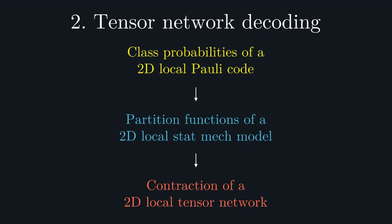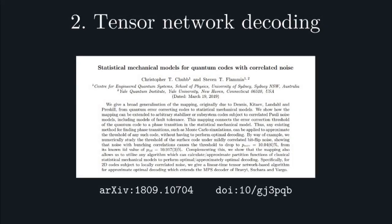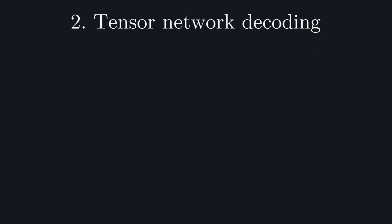For the sake of brevity, I'm not going to cover the full construction of this tensor network in this talk, and I would redirect you to my earlier paper on the STATMEC mapping for a discussion of this. But, for illustrative purposes, I'll try to give you a sense of what this mapping does by looking at the example of the Steane code.